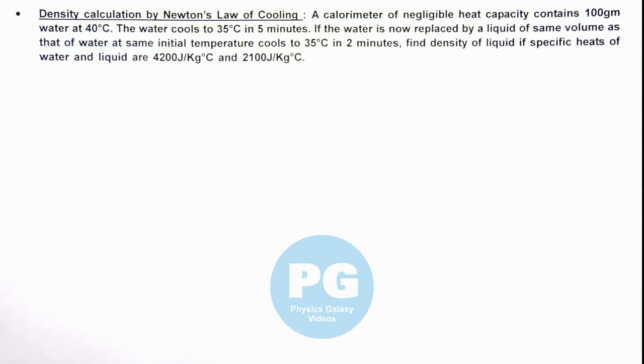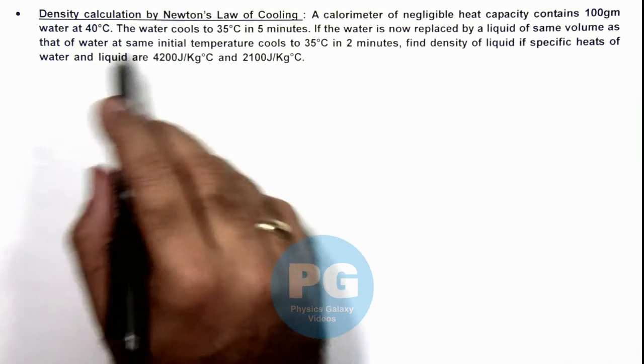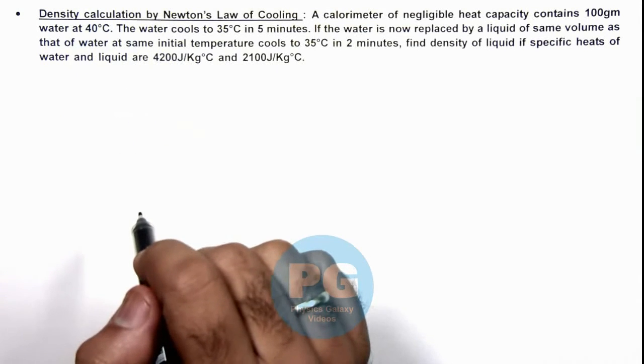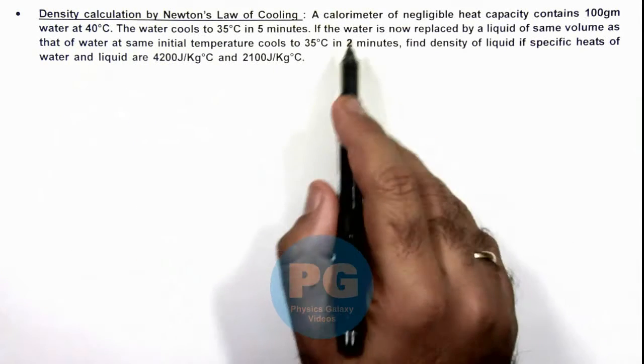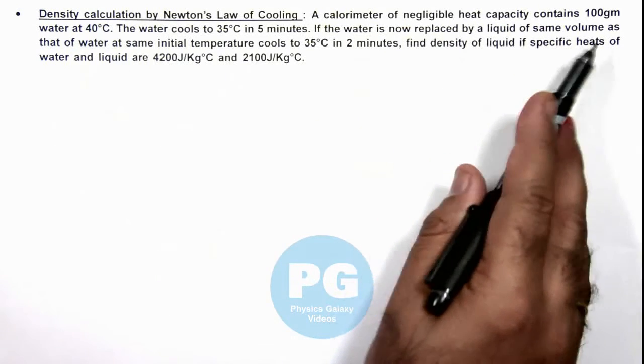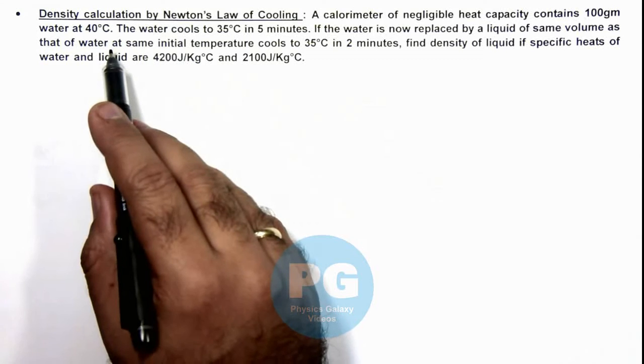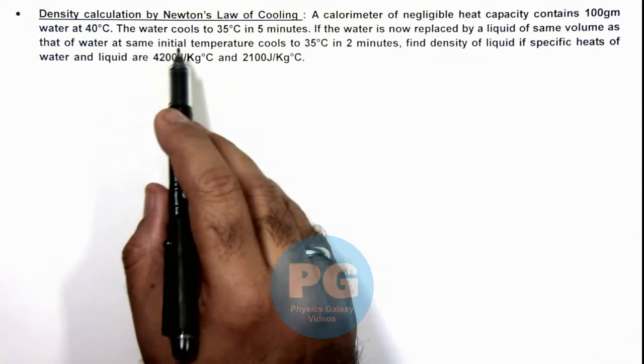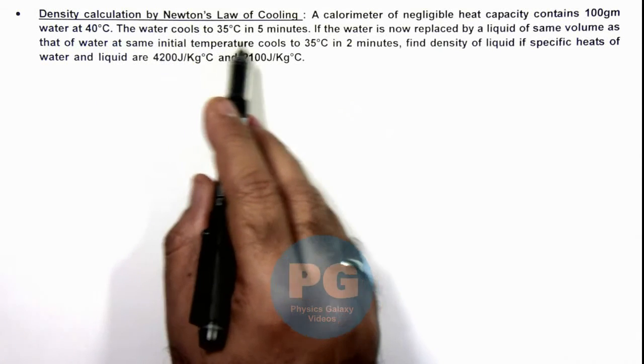In this illustration we'll study the density calculation by Newton's law of cooling. Here we are given that a calorimeter of negligible heat capacity contains 100 grams of water at 40 degrees Centigrade, and the water cools to 35 degrees Centigrade in 5 minutes.